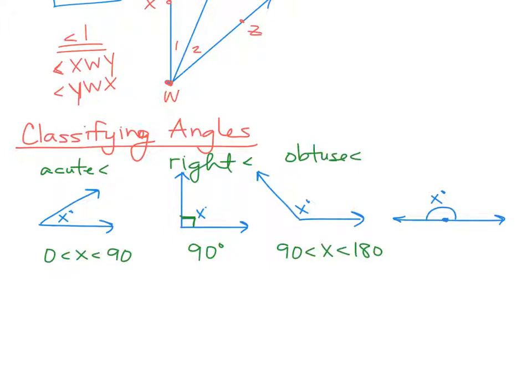And then does anyone know the name of the last one? It's a straight angle. Right. It does make a straight line. It's called a straight angle. And that one is always going to be 180 degrees. So on this quiz, I'm going to say, measure and classify the angle. So you're going to take your protractor and you're going to measure it. And then you're going to classify it as one of these four. So let's do the measuring part.